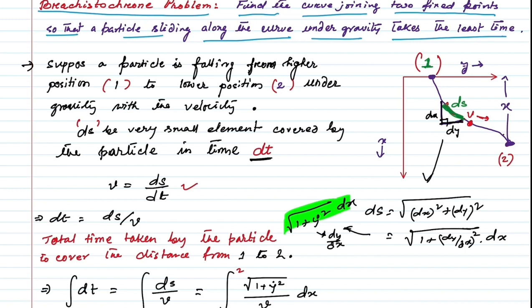Let the displacement along the x-axis be x. The potential energy at the starting position (when at rest) is mgx, and the kinetic energy of the particle of mass m moving with velocity V is ½mv².